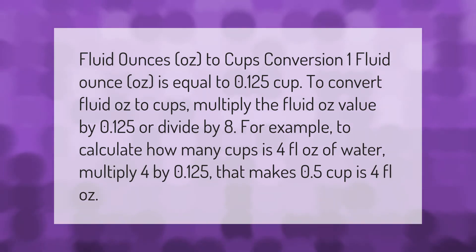Fluid ounces (oz) to cups conversion: 1 fluid ounce (oz) is equal to 0.125 cup. To convert fluid oz to cups, multiply the fluid oz value by 0.125 or divide by 8. For example, to calculate how many cups is 4 fl oz of water, multiply 4 by 0.125, that makes 0.5 cup is 4 fl oz. Thank you for watching, please subscribe and hit the bell notification.